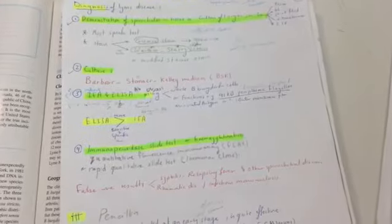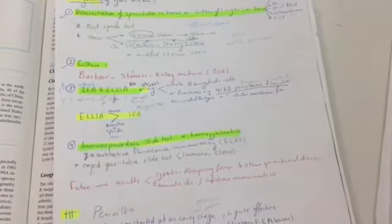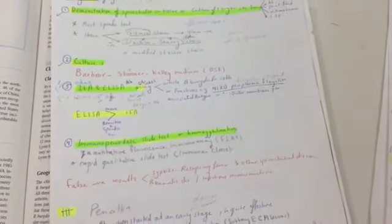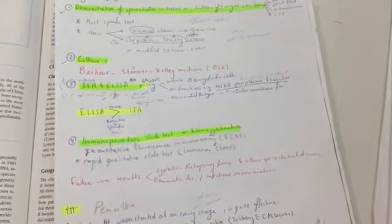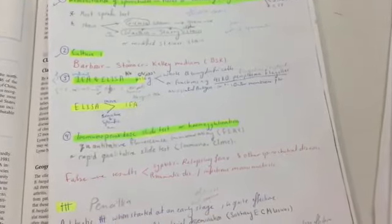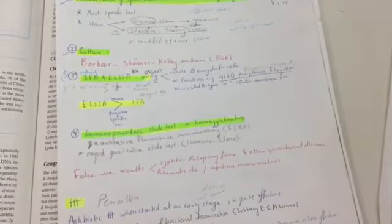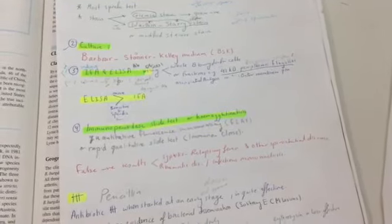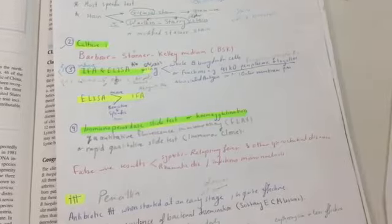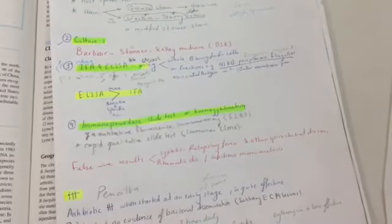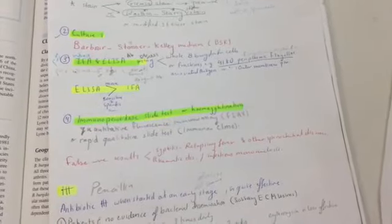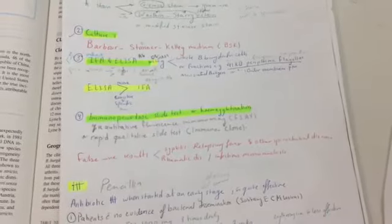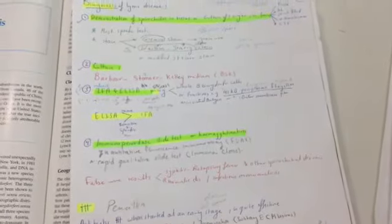So this is the diagnosis of Lyme disease: demonstration of spirochetes in tissues and culture the organism from tissue, blood, joint fluid, vitreous fluid, and CSF stained by Giemsa and Warthin-Starry silver stain, culture Barbour-Stoenner-Kelly medium, indirect and ELISA using whole Borrelia burgdorferi cells or fractions like 41 kilodalton flagellate protein, and immunoperoxidase slide test or hemagglutination. There is false negative test in syphilis and relapsing fever and other spirochaetal diseases and rheumatic diseases, infectious mononucleosis. This is how we diagnose the disease, the Lyme disease.